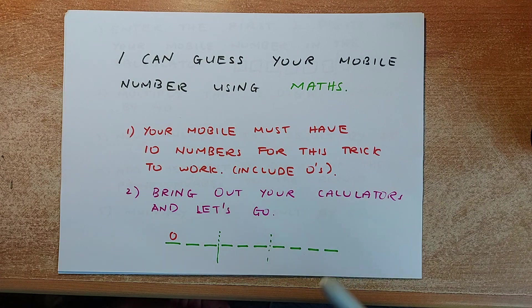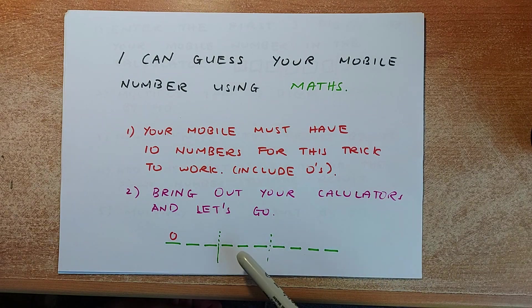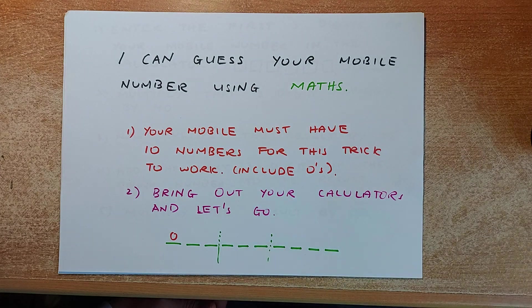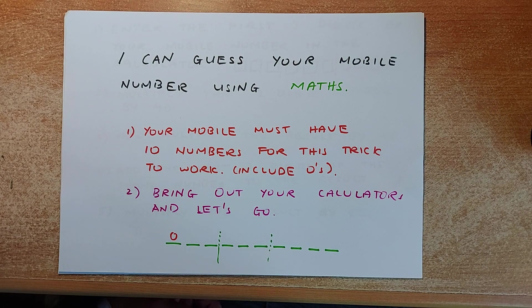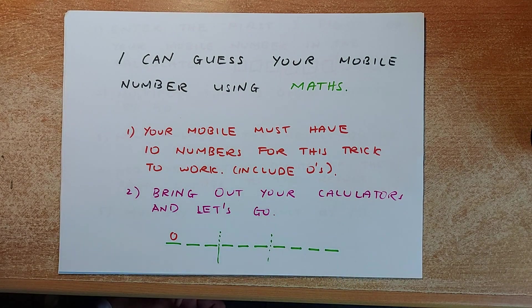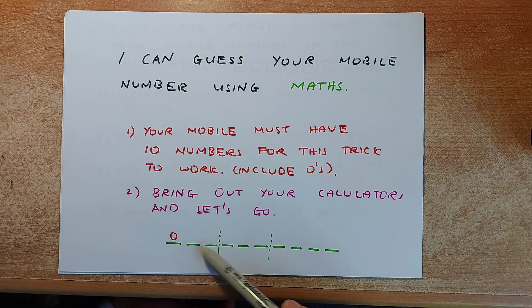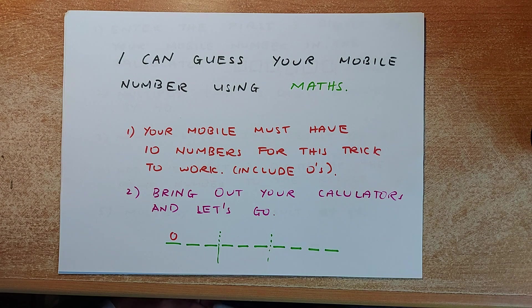You divide the number into 3 different sections: the first 3 digits, the next 3, and the last 4 digits. If you are doing a landline, it also works provided it has at least 8 numbers. If you have 8 numbers, put another 0 in front of it and then it will work. Make sure you have at least 8 numbers.